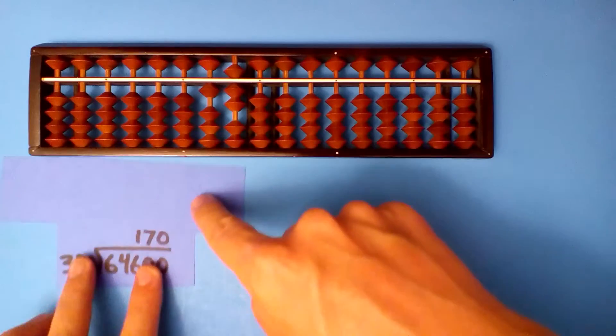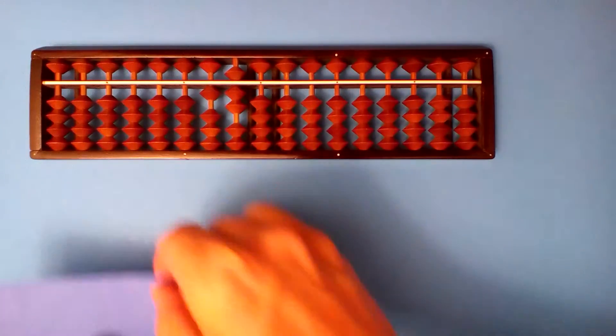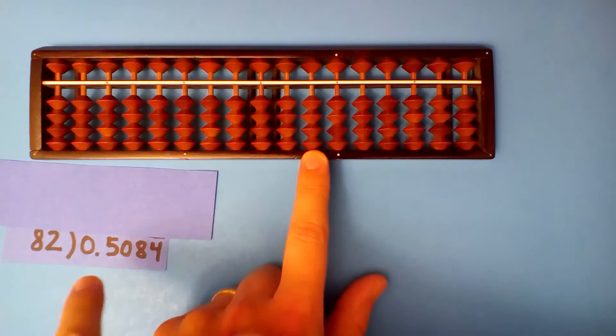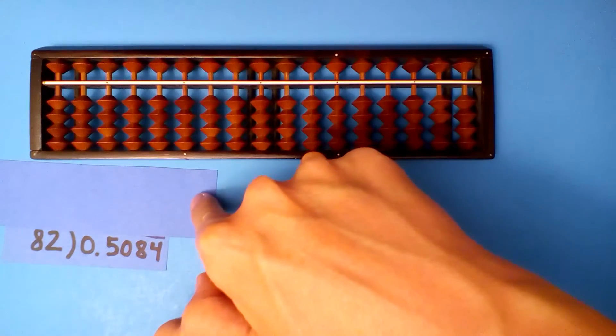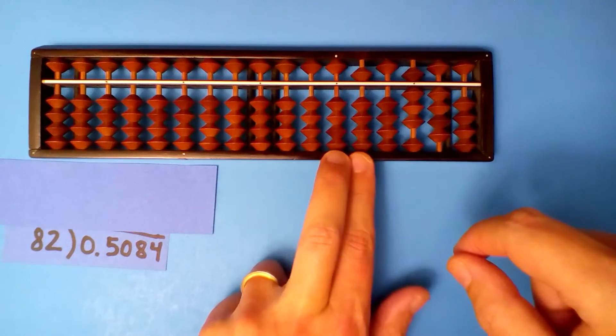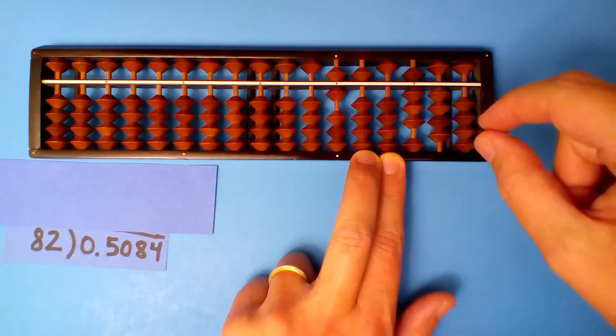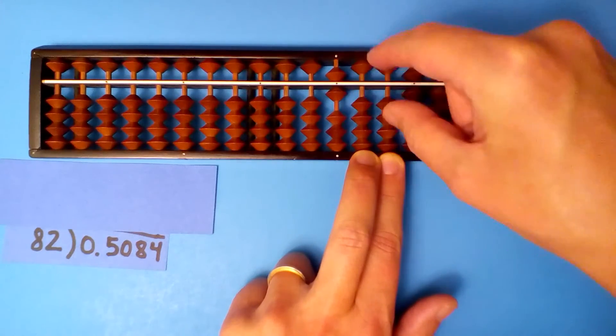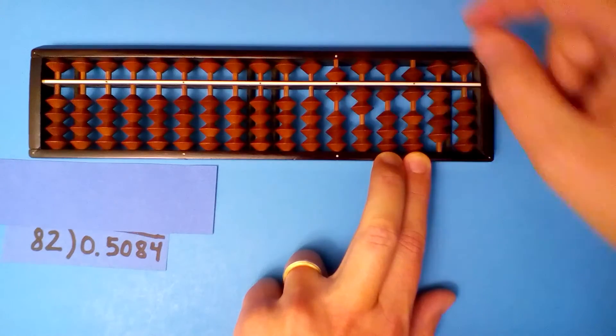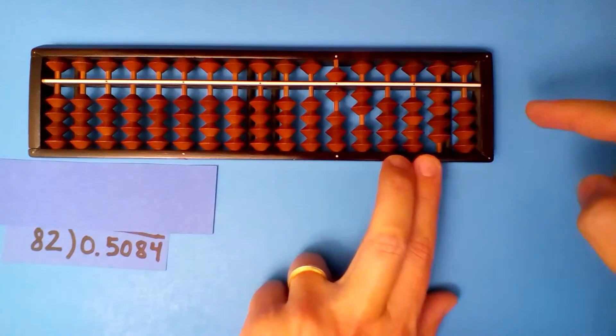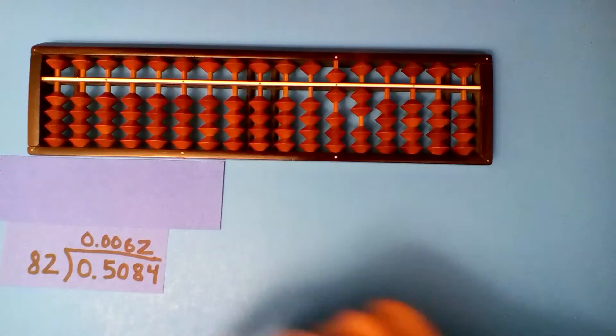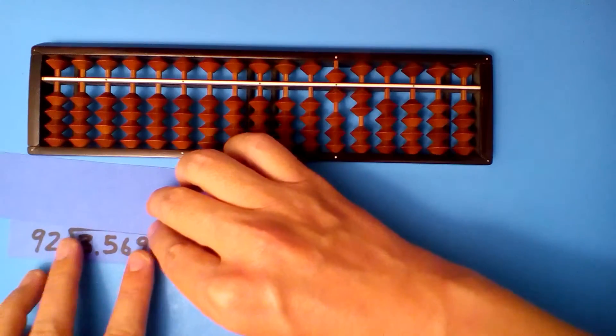What is 0.5084 divided by 82? Start on the hundred, zero digits, two digits. There's two fewer digits in the dividend. I'm gonna go 1, 2 to the right. Set up the dividend and divide. 8 goes into 50 six times. 6 times 8 is 48. 6 times 2 is 12. 8 goes into 16 twice. 2 times 8 is 16, 2 times 2 is 4. Our quotient is 0.0062.